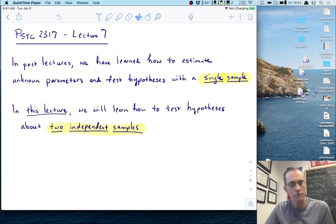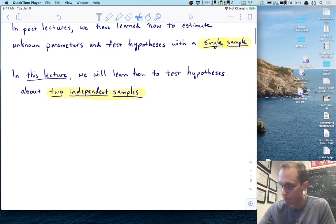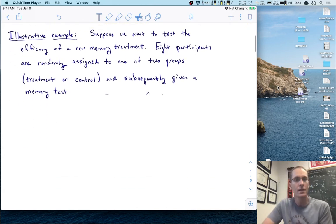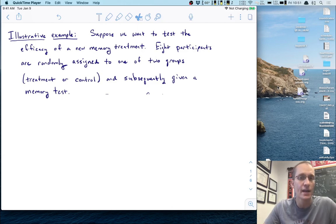In this lecture we're going to learn what to do when we want to test hypotheses about two samples, particularly two independent samples that have no overlap with each other. As usual I want to illustrate this with an example. Suppose we want to test the efficacy of a new memory treatment. Eight participants are randomly assigned to one of two groups, treatment or control, and subsequently given a memory test.